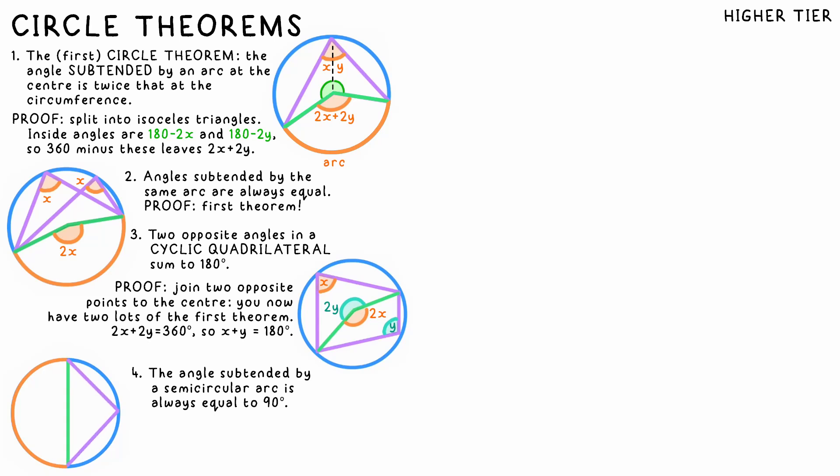If we make an arc a semicircle, the other point's angle will always be 90 degrees, and it will always be a right angle triangle. Why? Employing the first circle theorem again, the angle subtended at the center must be 180 degrees as it's a straight line, which must be double the angle at the circumference.